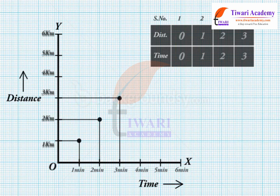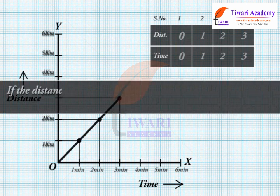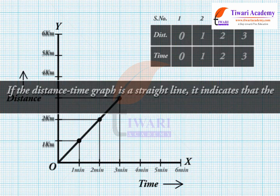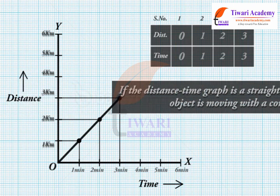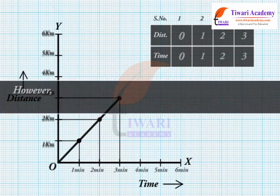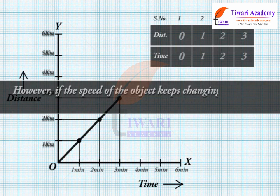Similarly, mark on the graph paper the points corresponding to different sets of values. Join all the points on the graph — it forms a straight line. This is the distance-time graph for the motion of the car. If the distance-time graph is a straight line, it indicates that the object is moving with a constant speed. However, if the speed keeps changing, the graph can be of any shape.